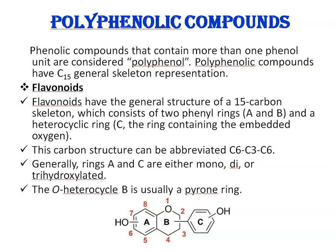Moving to polyphenolic compounds — when more than one phenol unit is present, they are called polyphenolic compounds with a carbon-15 general skeleton representation. The first example is flavonoids. Flavonoids have a general structure of a 15-carbon skeleton consisting of two phenyl rings, A and B, and a heterocyclic third ring C containing an embedded oxygen. This carbon structure can be abbreviated as C6-C3-C6. Rings A and C are either mono-, di-, or trihydroxylated depending on the number of hydroxyl groups attached, and ring B is usually a pyrone ring.